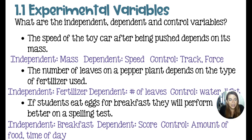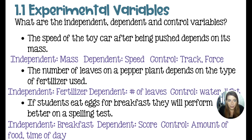Here are the answers. The question was: what are the independent, dependent, and control variables? The speed of a toy car after being pushed depends on its mass. The independent variable is mass — that is what we are testing. We will measure the dependent variable, the speed of these toy cars, and there are lots of controls. Two I have listed are the type of track that these cars are on and the applied force on the cars.